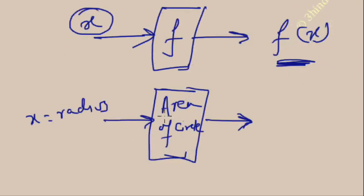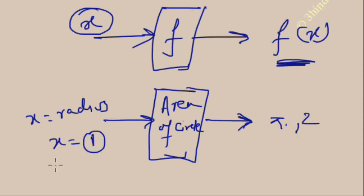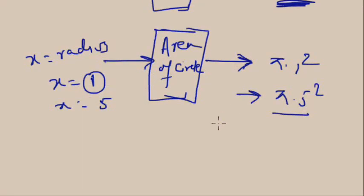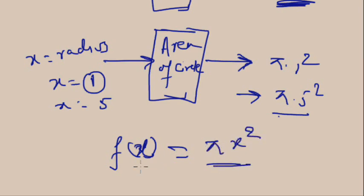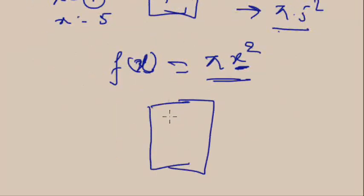Suppose we have a function that assumes X is a radius and converts it to the area of a circle. If X equals 1, the output will be π × 1². If X equals 5, the output will be π × 5². So we can write f(x) = πx². The output depends only on the values of X.